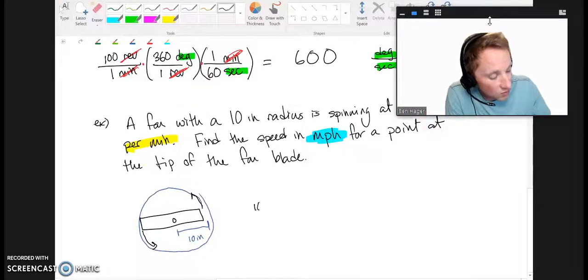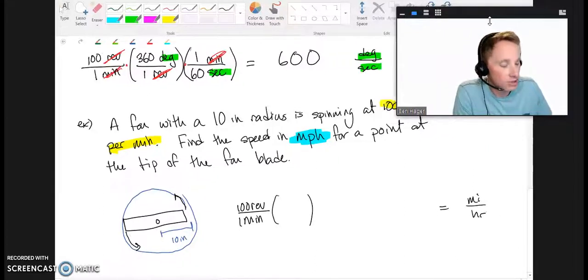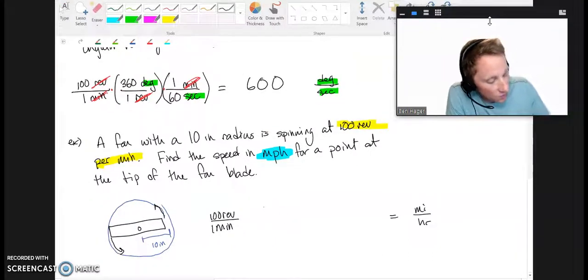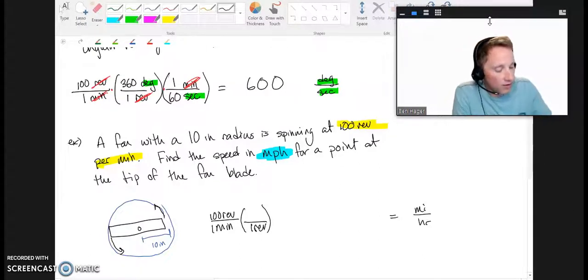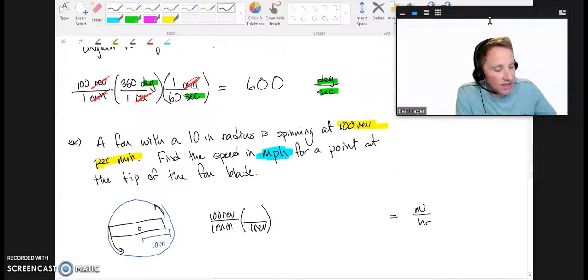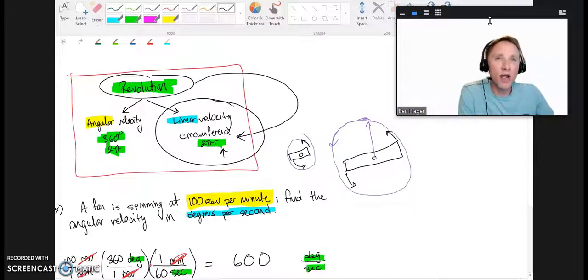And again, they did not have to tell me find linear velocity. I did not need to be told that to figure out this problem because they asked me to find the speed in miles per hour. Miles is a distance. This is distance over time. So, this is a linear velocity. It's going to be the exact same procedure. I'm going to start with the rate they tell me, 100 revs per minute, and I'm going to convert and convert and convert until I'm left in miles per hour. So, why don't I get rid of the revolutions first? How do I go from revolutions to a distance?